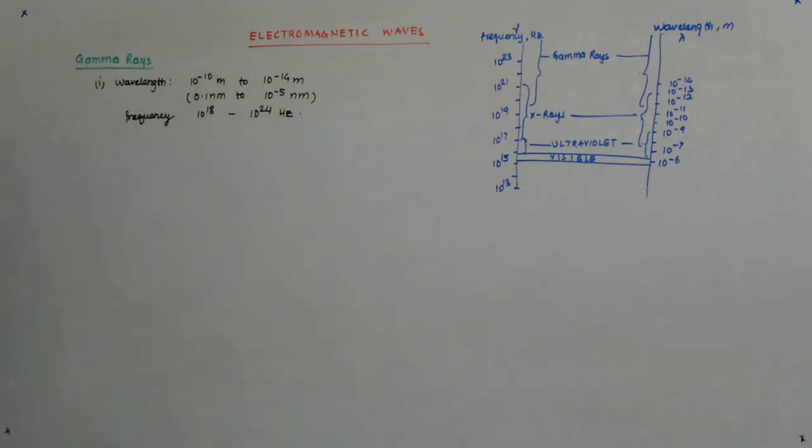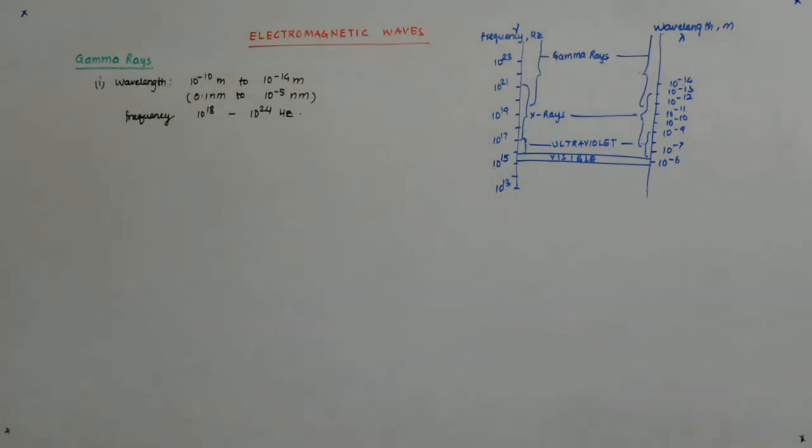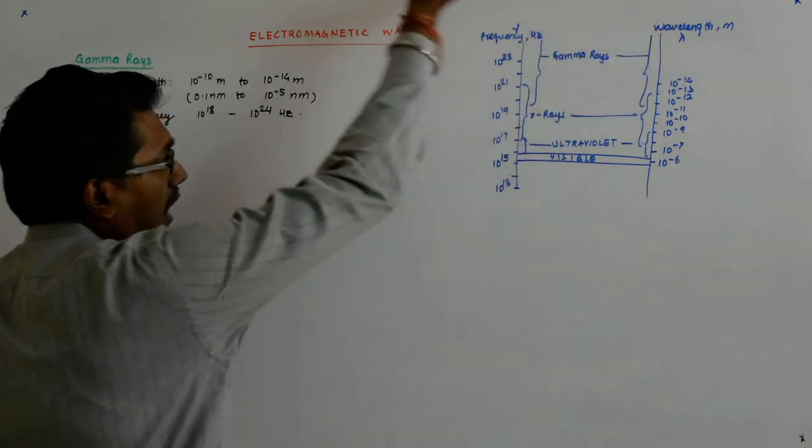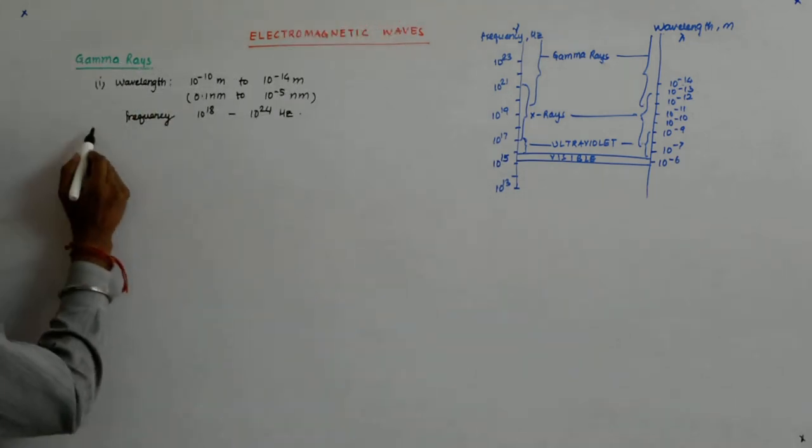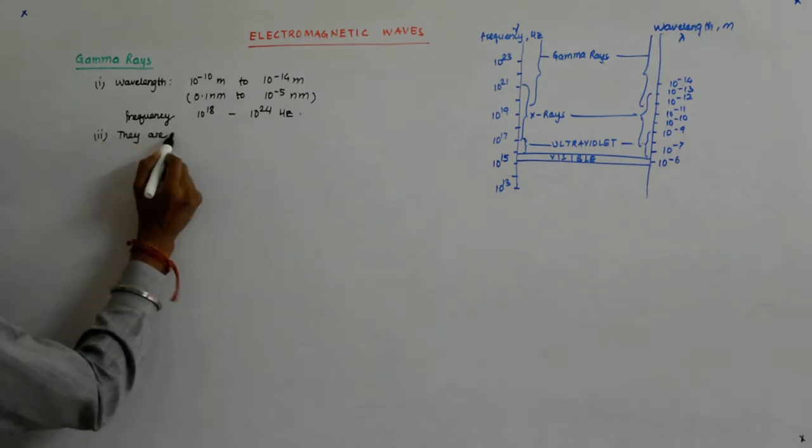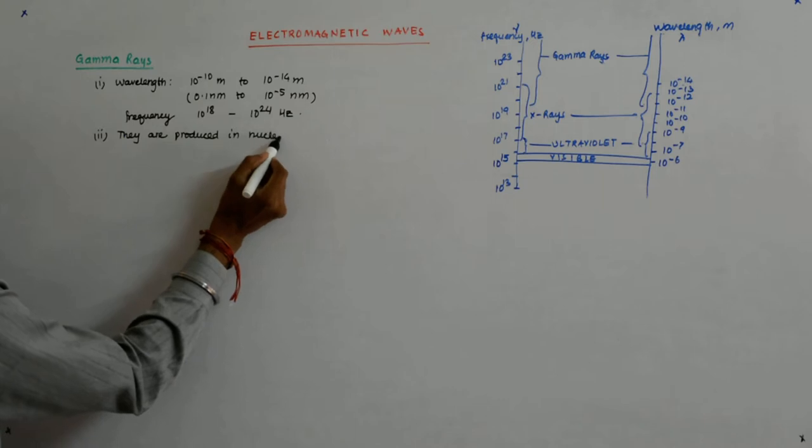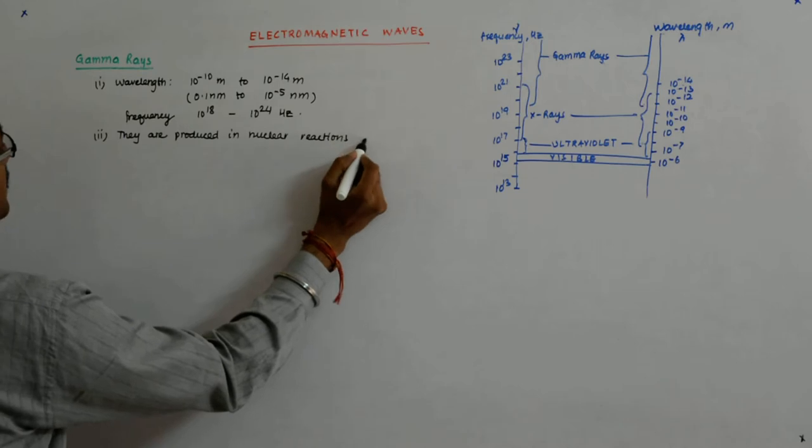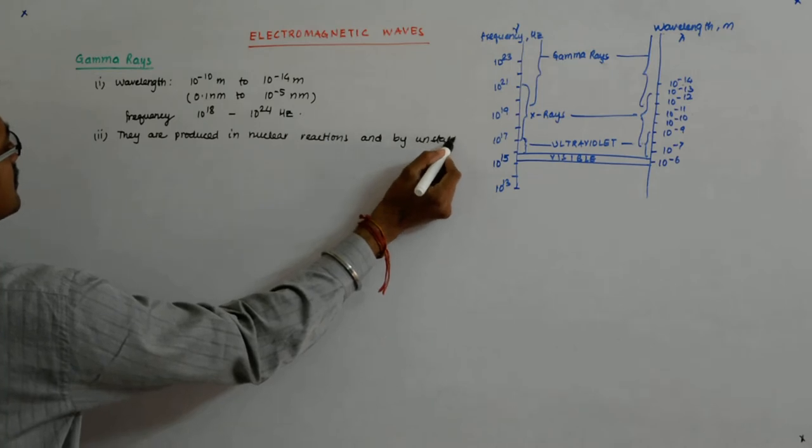So they are extremely dangerous, very high energy per photon. Very very high energy and gamma rays are also divided into two. So the upper reaches of the gamma rays are called hard gamma. And how are they produced? They are produced in nuclear reactions and by unstable nuclei.